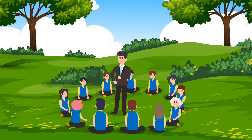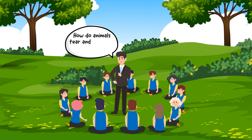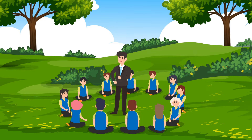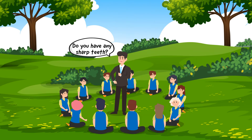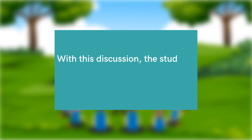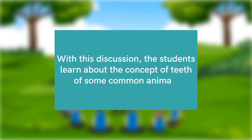Next, ask the students if they can tell how animals can tear and eat flesh without having a beak. They may say that animals have sharp teeth. Then ask the students, do you have any sharp teeth? The students might say yes and point towards their canines. With this discussion, the students will learn about the concept of teeth of some common animals.